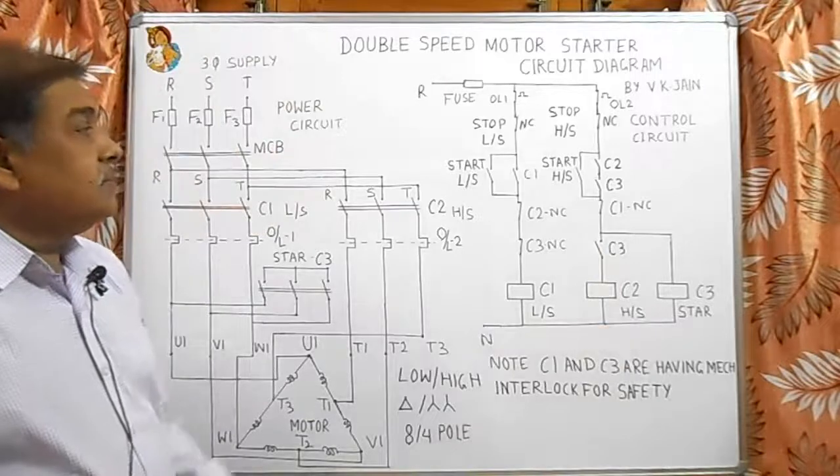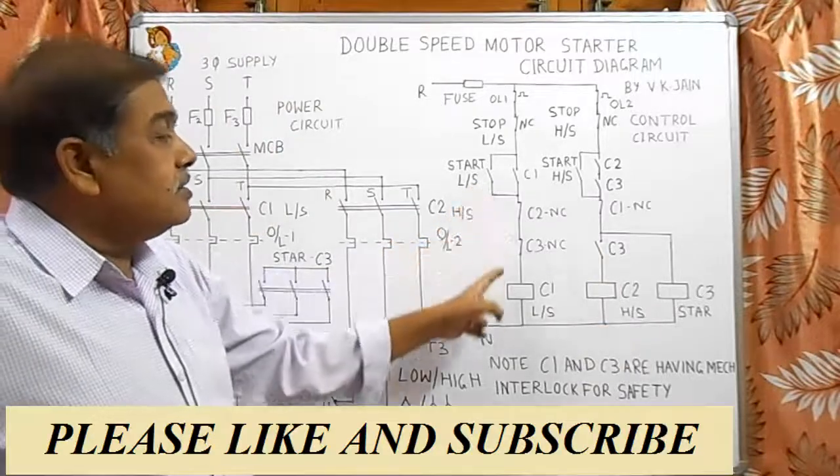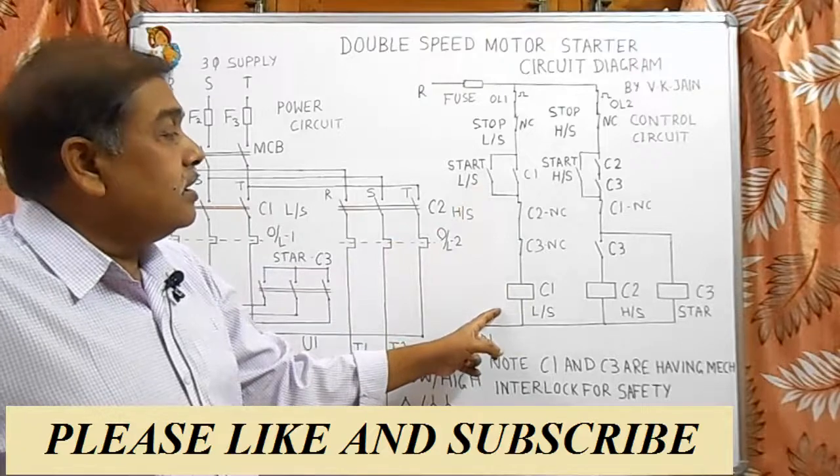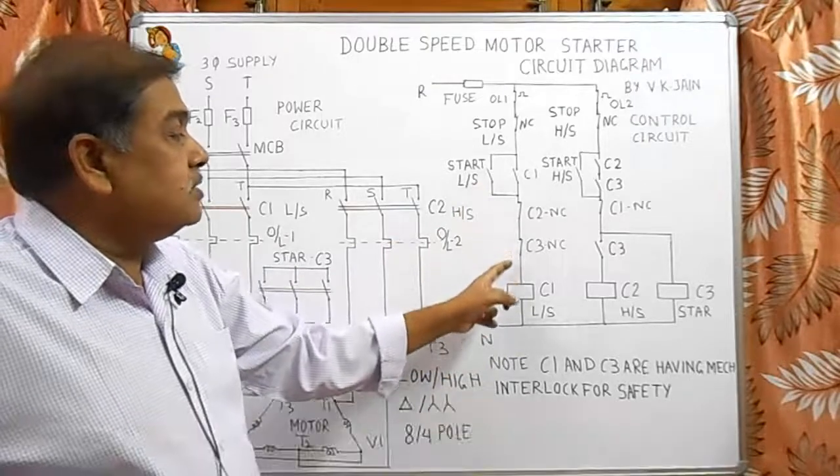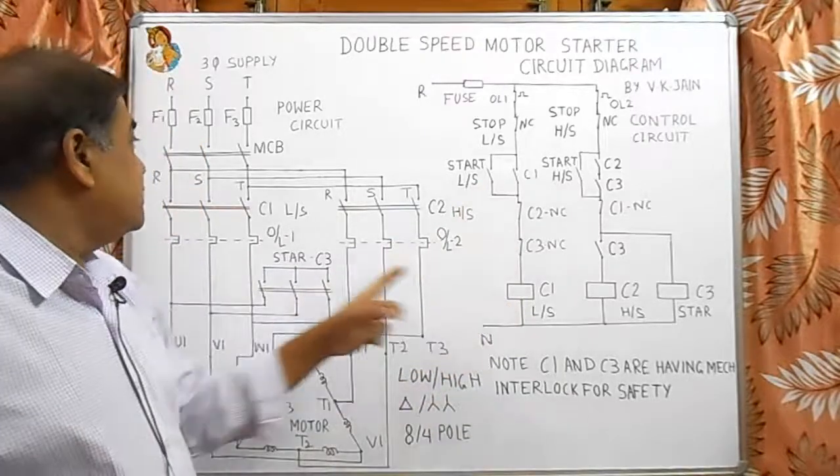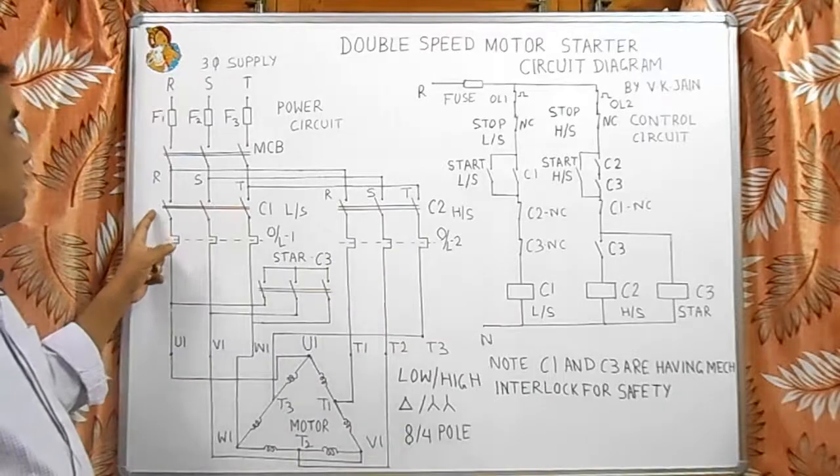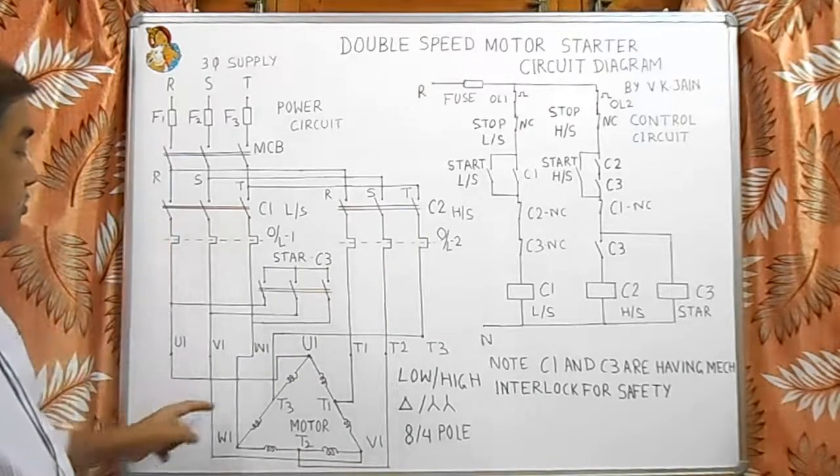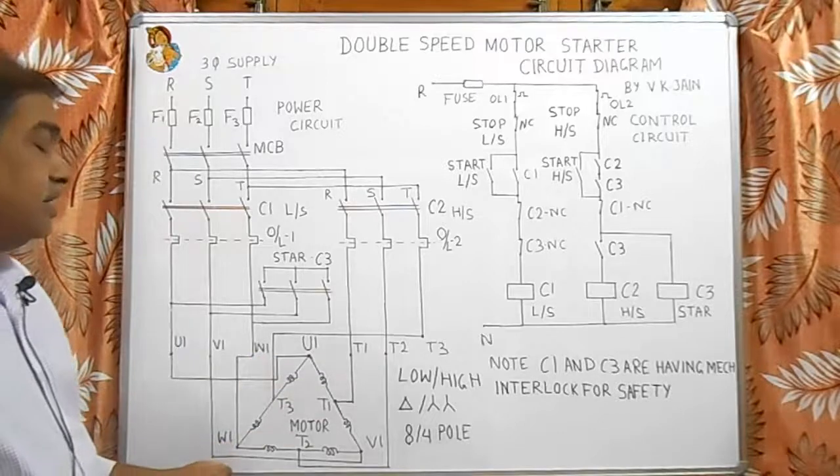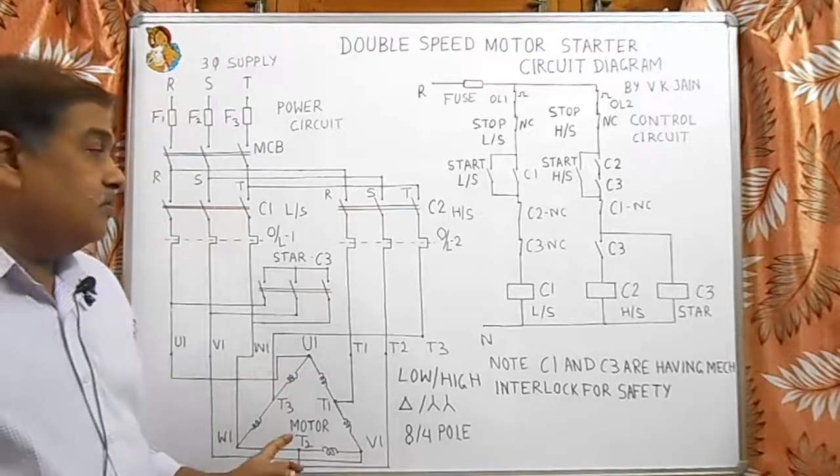When we push this button, the C1 contactor picks up and this C2 and C3 gives interlocking. As C1 contactor picks up, here C1 power contactor closes and the supply goes to the motor U1, V1 and W1 and the motor starts running at low speed.